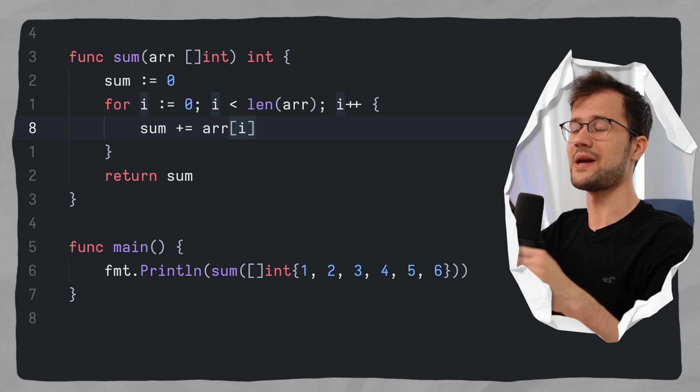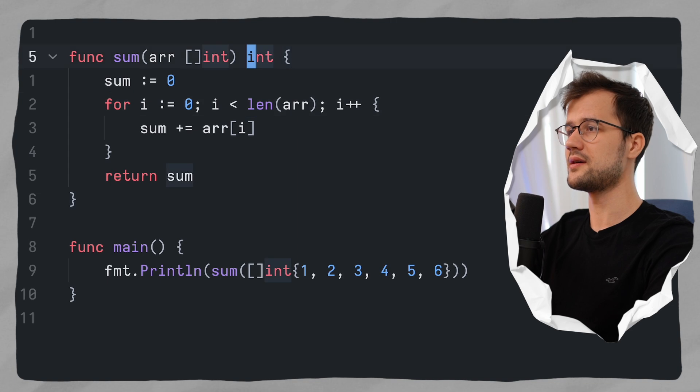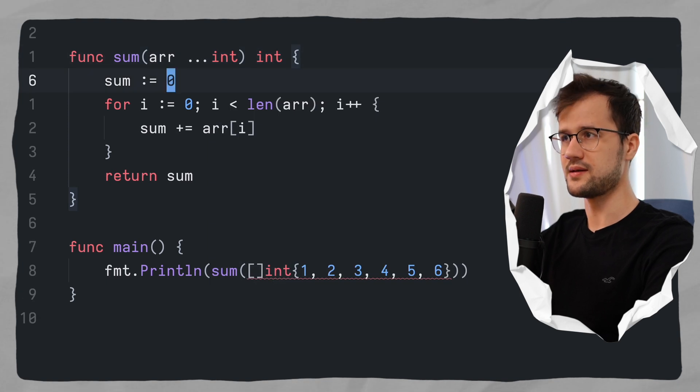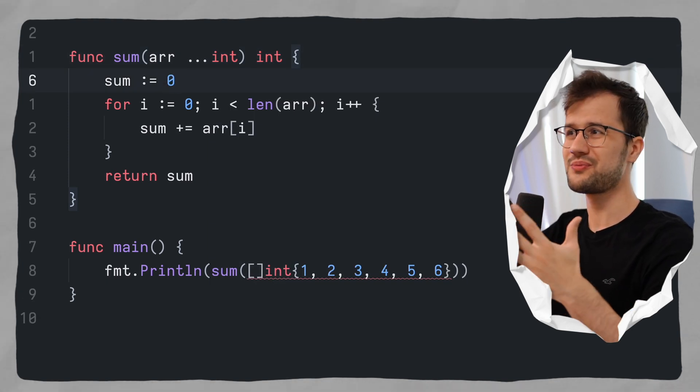A variadic function is basically defined by three dots in golang. So what we can say here is just instead of having the slice, we can say dot dot dot and then int. And now we've defined our first variadic function, which is pretty cool, I think.